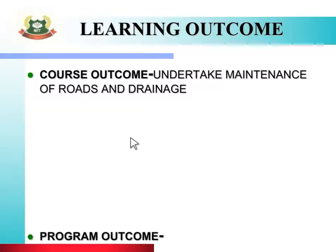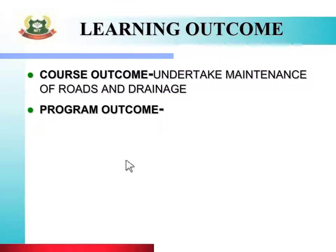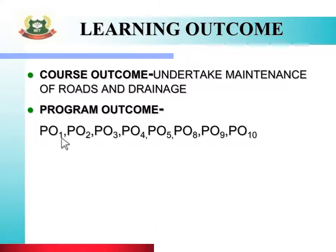Second hai Program Outcome. Isme aata hai PO1, PO2, PO3, PO4, PO5, PO8, PO9, PO10 — jaise ki basic knowledge, discipline knowledge, experiment and practice, engineering tools, experiments and society, individual and teamwork, communication and lifelong learning — in sabhi POs ka use karke aap yeh topic study karoge.